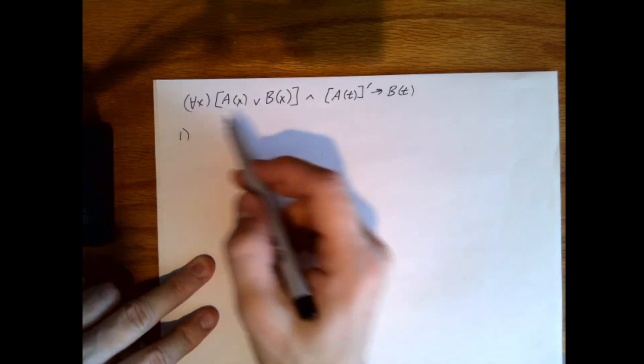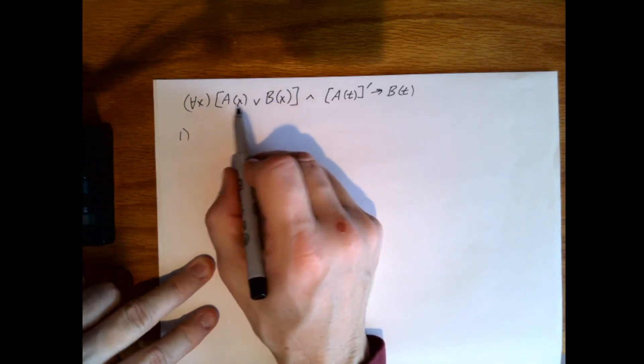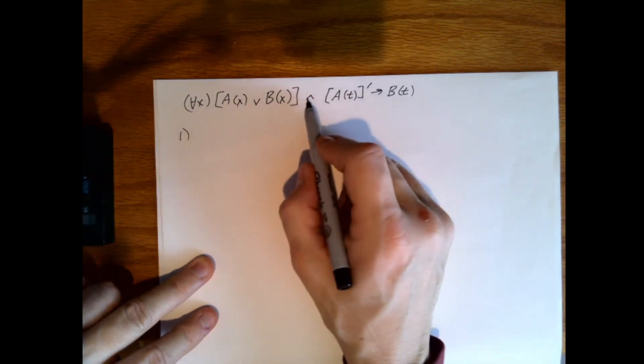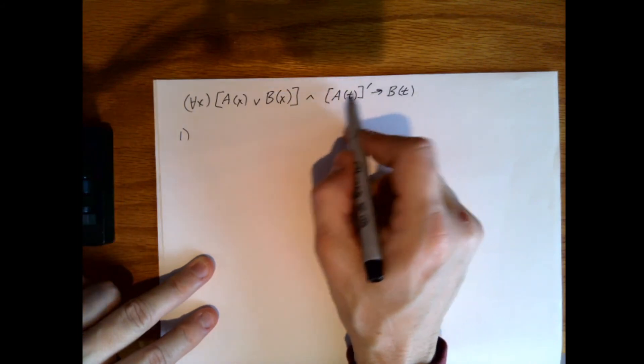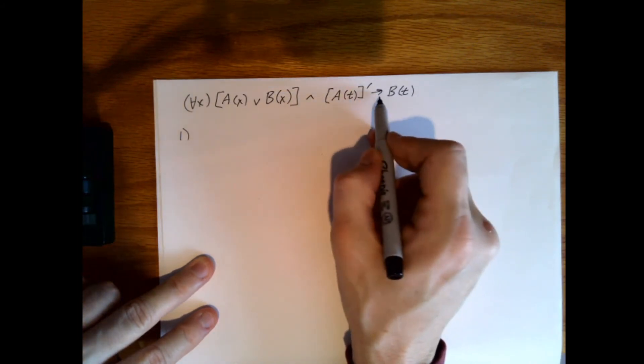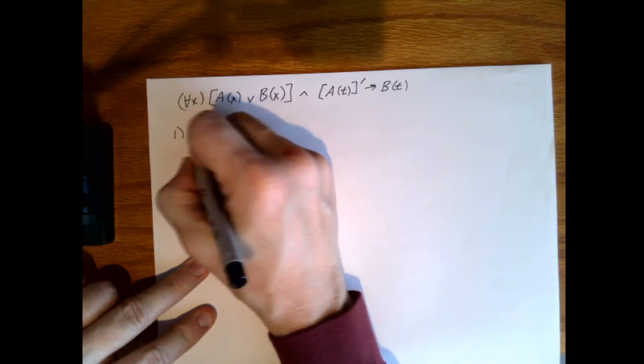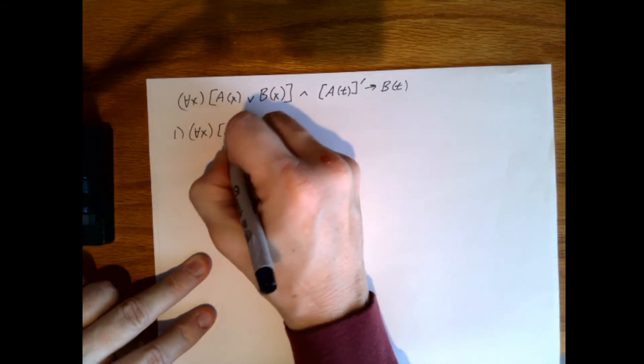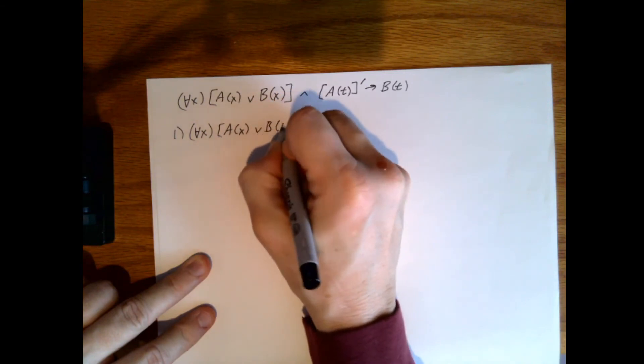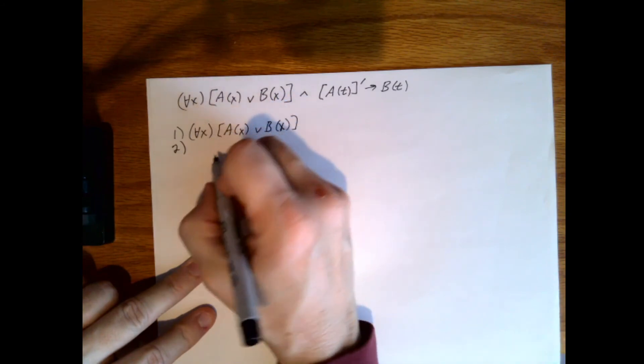So it says, for all x, a of x, a of x or b of x, and the negative of a of t implies b of t. That's our first hypothesis. Our second hypothesis.